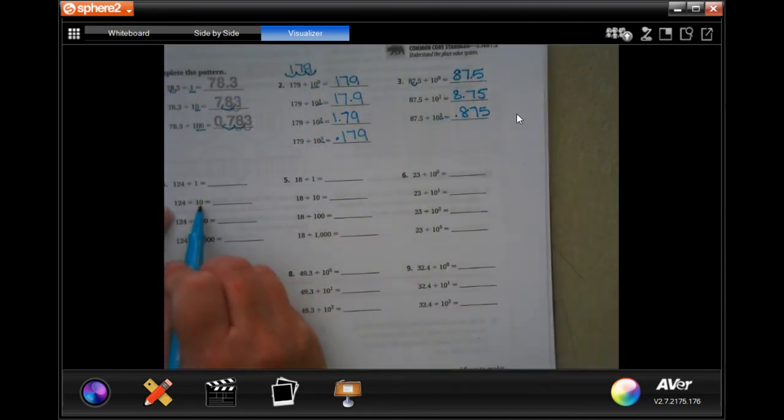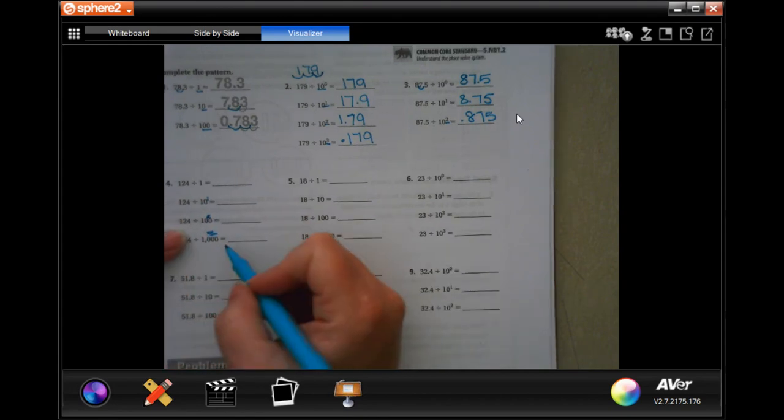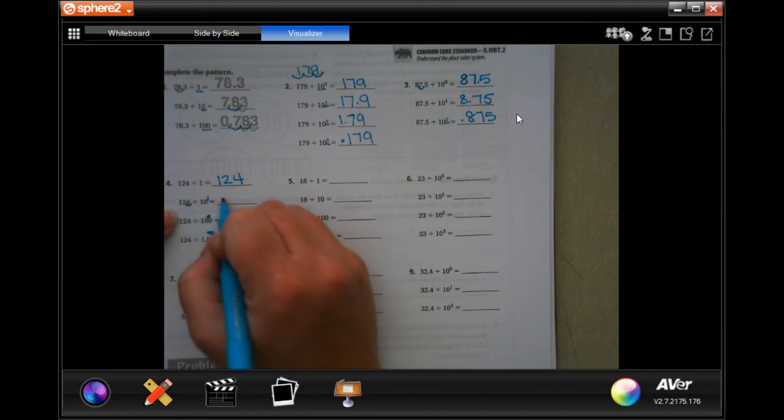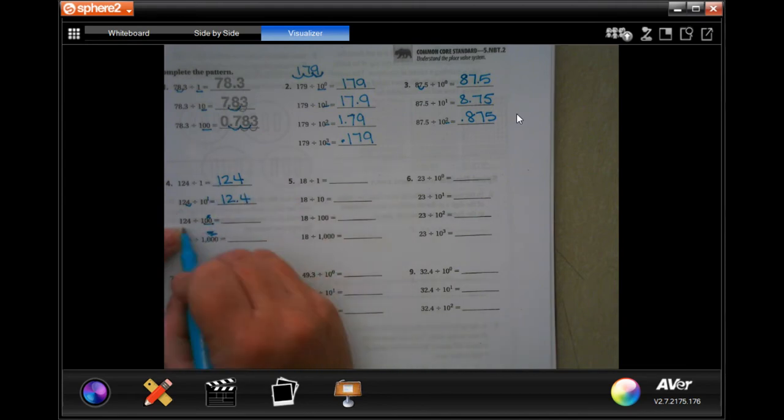So that's the exponent. These are the same thing. This is just 10 to the 1st. This is 10 to the 2nd. This is 10 to the 3rd. So just because you don't have an exponent on it here, it's still the same number. So not moving it at all when you're dividing it by 1. Moving it one time when you're dividing it by 10, so it's 12.4. Moving it two zeros, we're going to move it two places, 1.24. Three zeros, move it three places, 0.124.